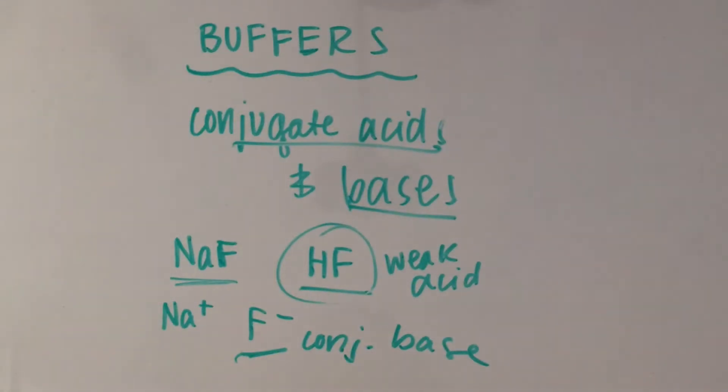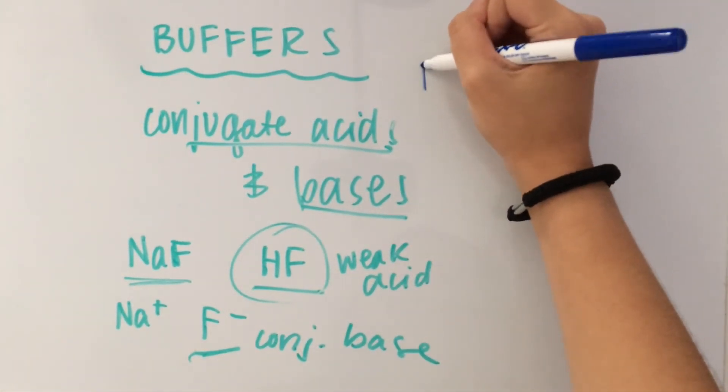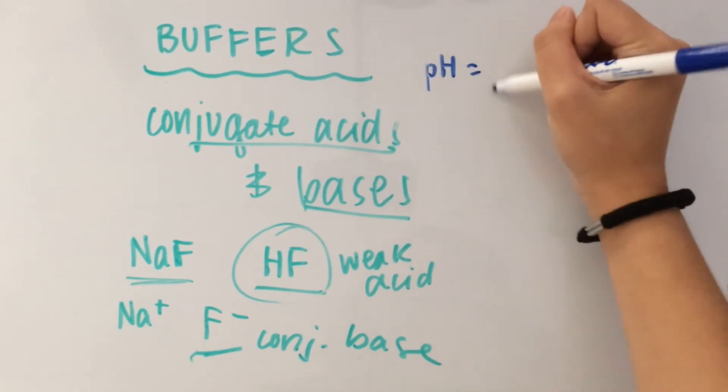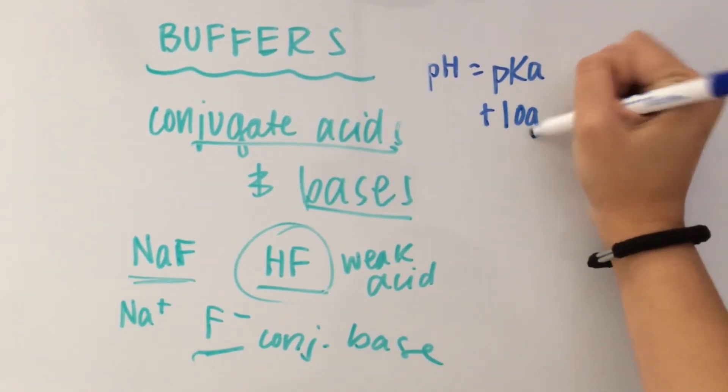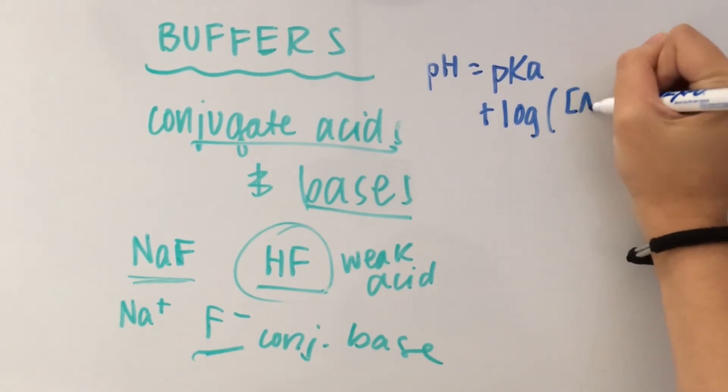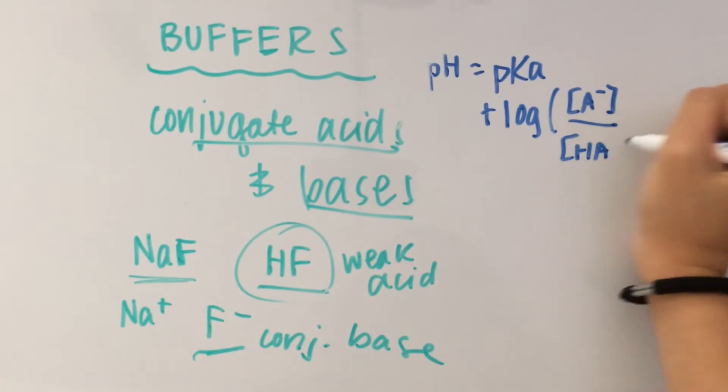There's also an equation called the Henderson-Hasselbalch equation, which is really useful when you're doing calculations with buffers. So what the Henderson-Hasselbalch equation looks like is pH equals pKa plus the log of concentration of the base over the concentration of the conjugate acid.